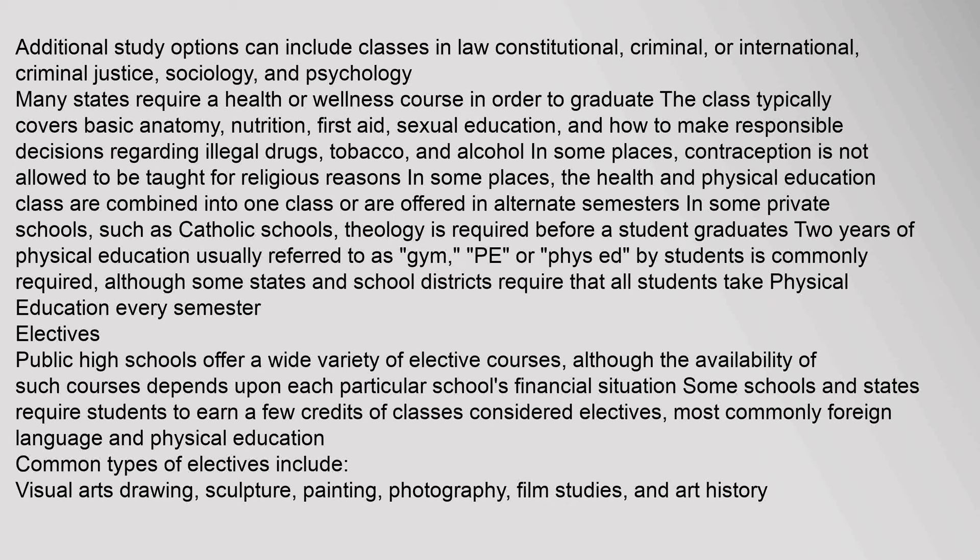Additional study options can include classes in Law (Constitutional, Criminal, or International), Criminal Justice, Sociology, and Psychology. Many states require a Health or Wellness course in order to graduate. The class typically covers Basic Anatomy, Nutrition, First Aid, Sexual Education, and how to make responsible decisions regarding illegal drugs, tobacco, and alcohol. In some places, contraception is not allowed to be taught for religious reasons. The Health and Physical Education classes are sometimes combined or offered in alternate semesters. In some private schools such as Catholic schools, Theology is required. Two years of Physical Education are commonly required, though some states require physical education every semester.